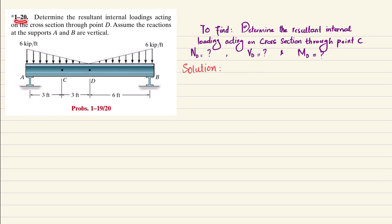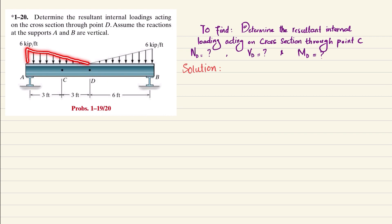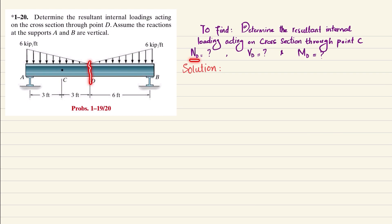Welcome back. Problem 1-20: determine the resultant internal loading acting on the cross section through point D. Assume the reactions at supports A and B are vertical. This is a simply supported beam with supports at A and B, having a uniformly decreasing load from A to D and a uniformly increasing load from A to B at 6 kip per feet. We need to find ND, VD, and MD.